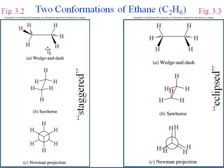Wedges and dashes are useful as well, although it's harder to see the difference in those two conformations using them. These heavy lines represent bonds coming out towards us. The dashed lines are bonds receding back behind the screen. And the regular lines are bonds that are in the plane of the screen. So we'll see some of all of this as we go along.